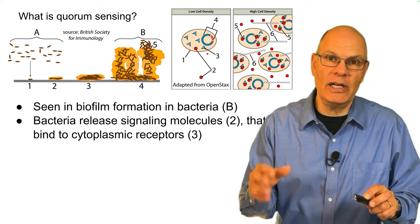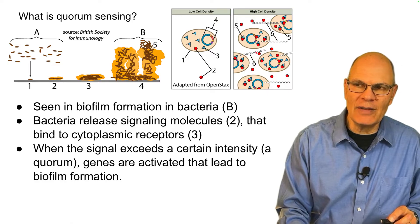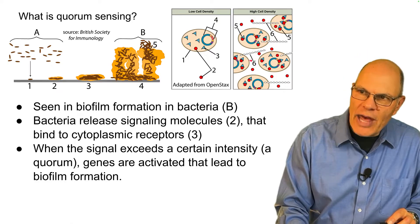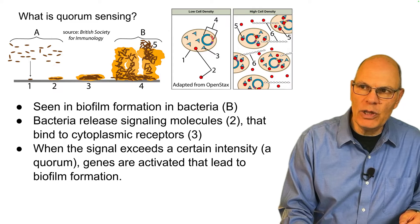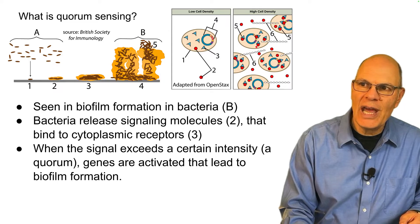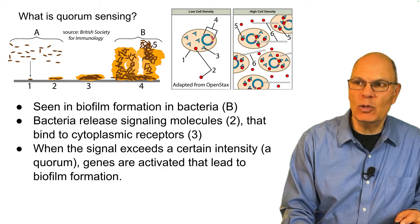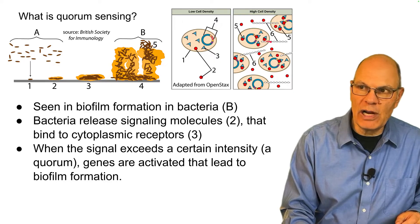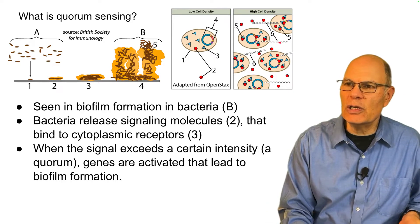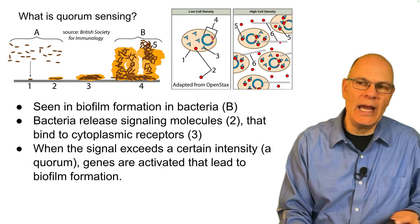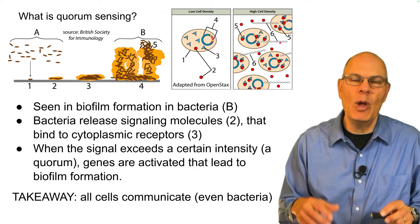When the signal exceeds a certain intensity — meaning there are a lot of cells around, that's a quorum — those signals bind with the receptors and activate genes. That gene activation leads to the expression of, in this case, a polysaccharide that forms the biofilm.